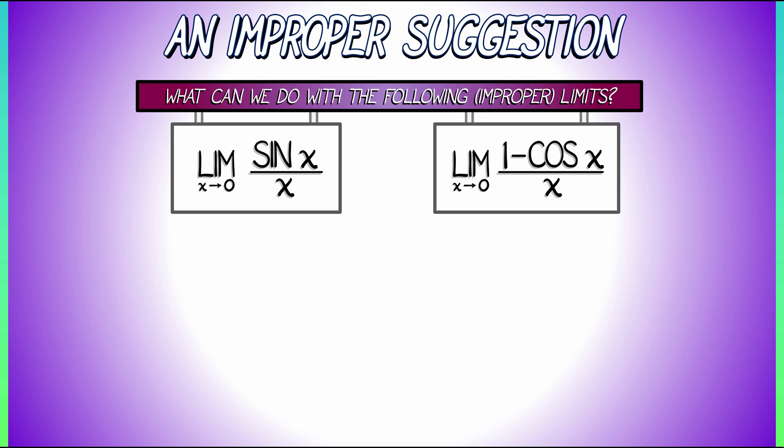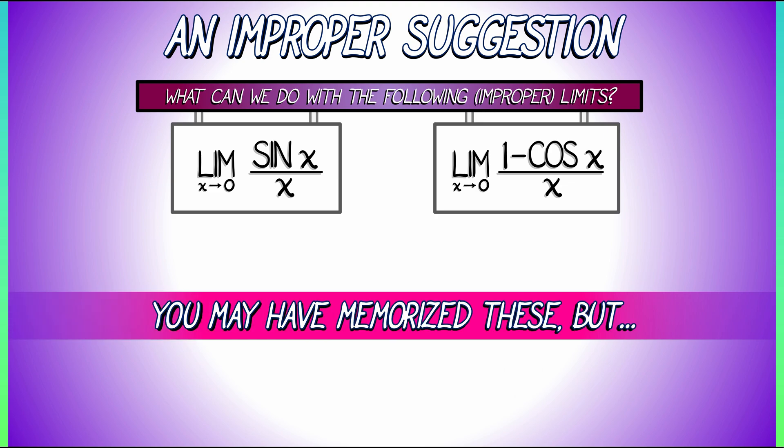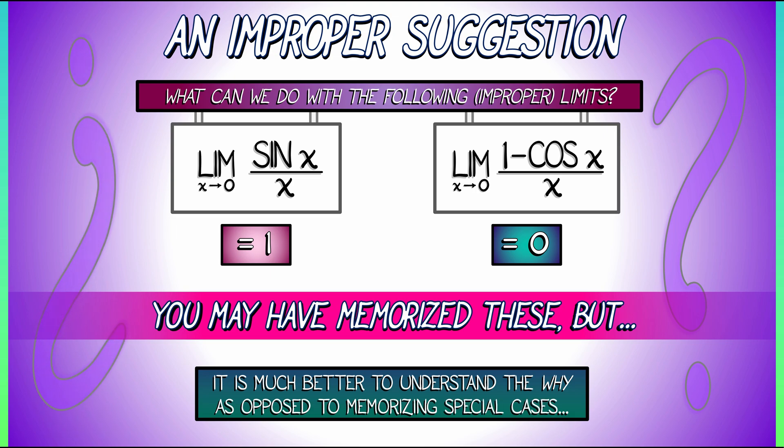These are improper limits. They both evaluate to 0 over 0. Nevertheless, the limits exist. You may have memorized these before. You may remember that the limit as x goes to 0, sine of x over x is 1, and that the limit as x goes to 0 of 1 minus cosine of x over x equals 0. That's great if you remember that. But why? Why is it true? It's much better to understand the reason behind these results rather than simply memorize what the answers are. Understanding the meaning, the reason behind these improper limits, that's what we're going to address next.